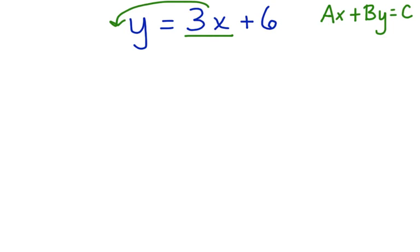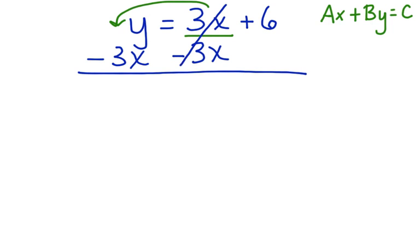We can use the simple things that you've already learned about how to solve equations to do this. We can use the inverse. So the inverse of a positive 3x is a negative 3x. And we can do that on both sides of the equation. These cancel, so we end up with negative 3x plus y equals a positive 6.